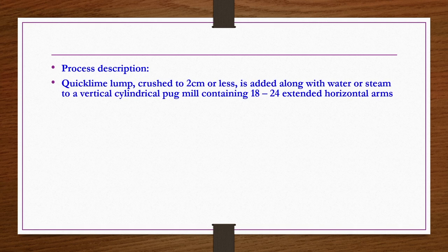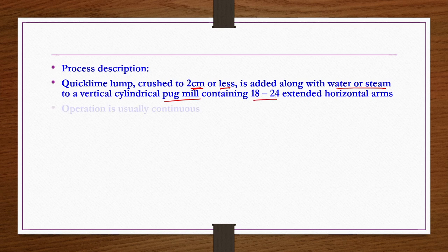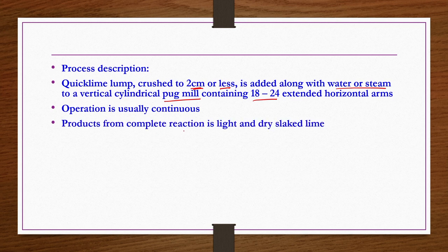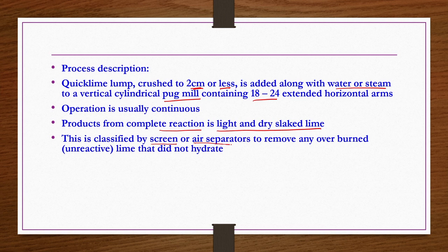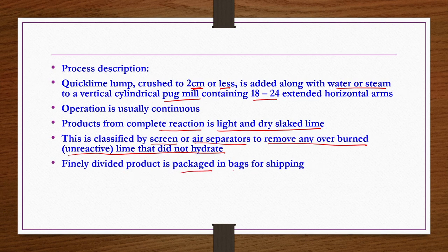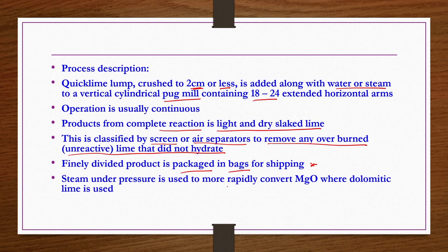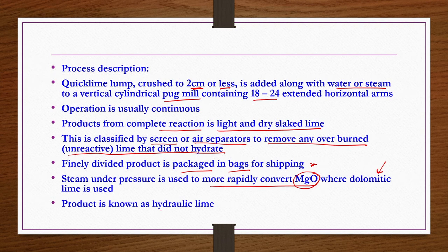Process description for hydrated lime: quick lime lump crushed to 2 centimeters or less is added along with water or steam to a vertical cylindrical pug mill containing 18 to 24 extended horizontal arms. Operation is usually continuous. The product from the complete reaction is light and dry slaked lime. This is classified by screen or air separators to remove any overburnt or unreactive lime that did not hydrate. The finely divided product is packaged in bags for shipping. Steam under pressure is used to more rapidly convert magnesium oxide where dolomitic lime is used - the product obtained in that case is known as hydraulic lime. That is the difference between hydrated and hydraulic lime.